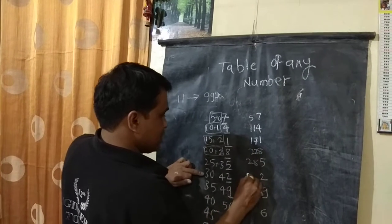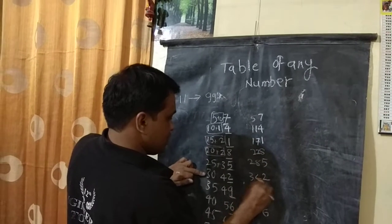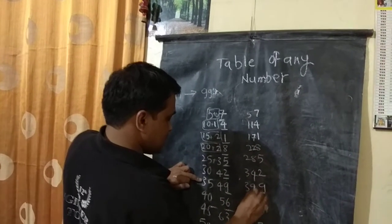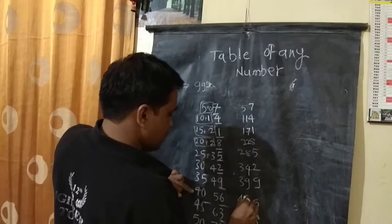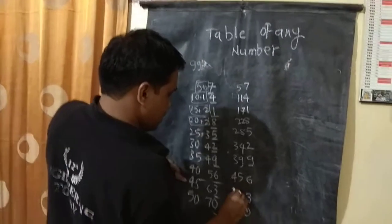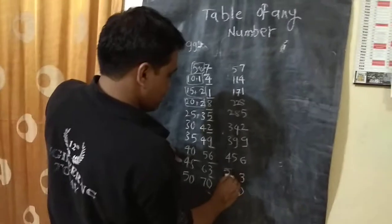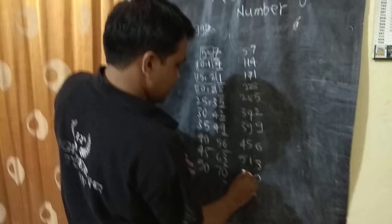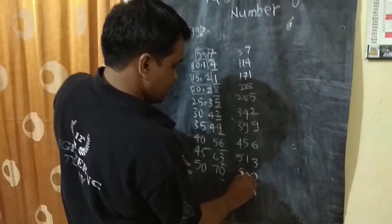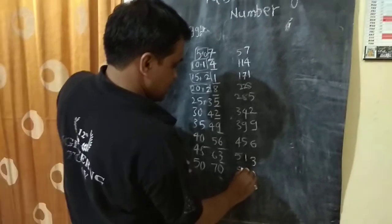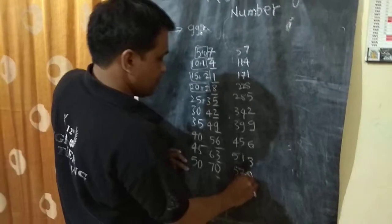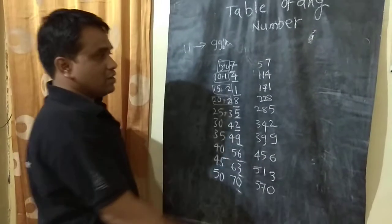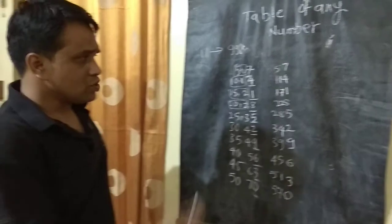Continuing: 30 plus 4 is 34, 35 plus 4 is 39, 40 plus 5 is 45, 45 plus 6 is 51, 50 plus 7 is 57. So this is the table of 57. Simple.